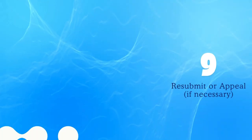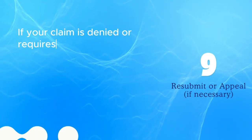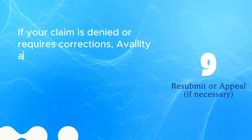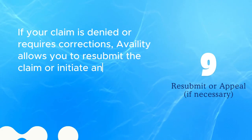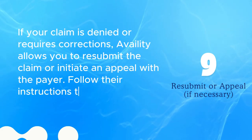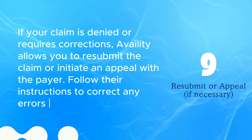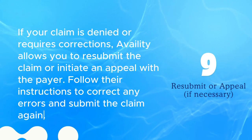Step 9: Resubmit or appeal if necessary. If your claim is denied or requires corrections, Availability allows you to resubmit the claim or initiate an appeal with the payer. Follow the instructions to correct any errors and submit the claim again.